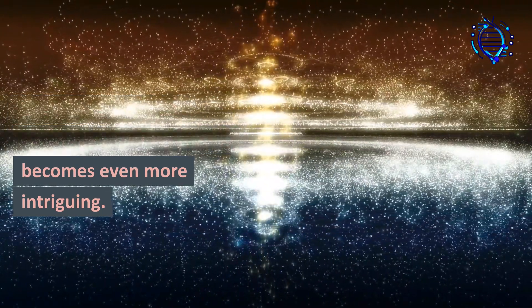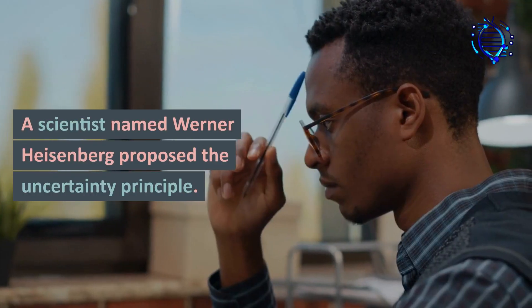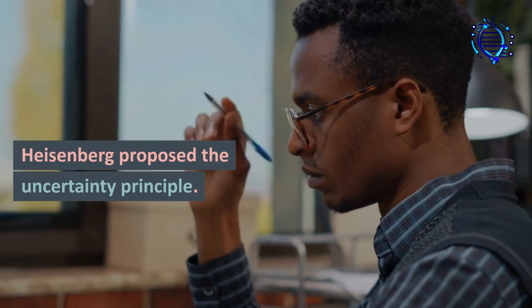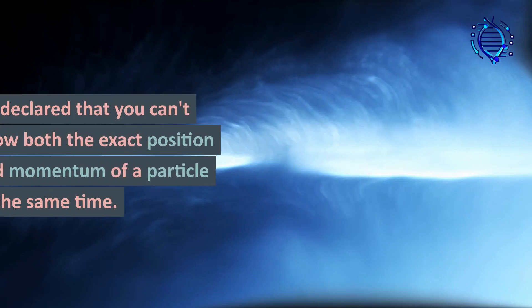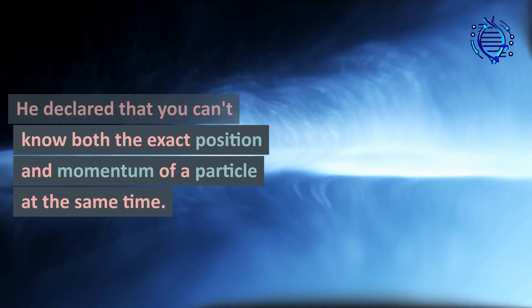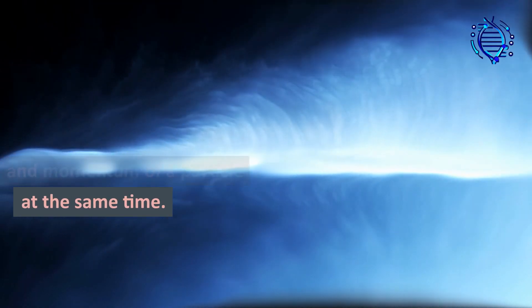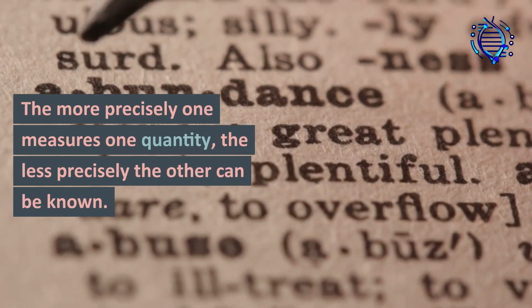And that's not all. Here's where a pivotal incident in quantum history becomes even more intriguing. A scientist named Werner Heisenberg proposed the uncertainty principle. He declared that you can't know both the exact position and momentum of a particle at the same time.